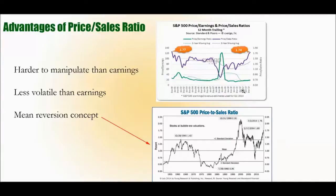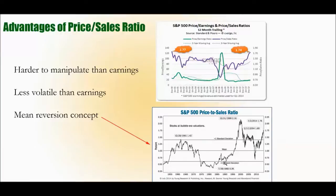With both price-sales and price-earnings, there's a concept of mean reversion. A lot of investors use price ratios with this concept — when the ratio gets too high, that's when you want to sell, things are overvalued; when price-sales, price-earnings, or price-cash-flow is low, that's the time to buy. For example, if you sold on December 29th, 1961, when the price-sales ratio was at a high, that probably would have been a good idea. If you bought on July 26th, 1982, when price-sales reached a low below 0.6 on the S&P 500, that was a good time to buy. If it's at 1.42, that's probably a good time to sell.